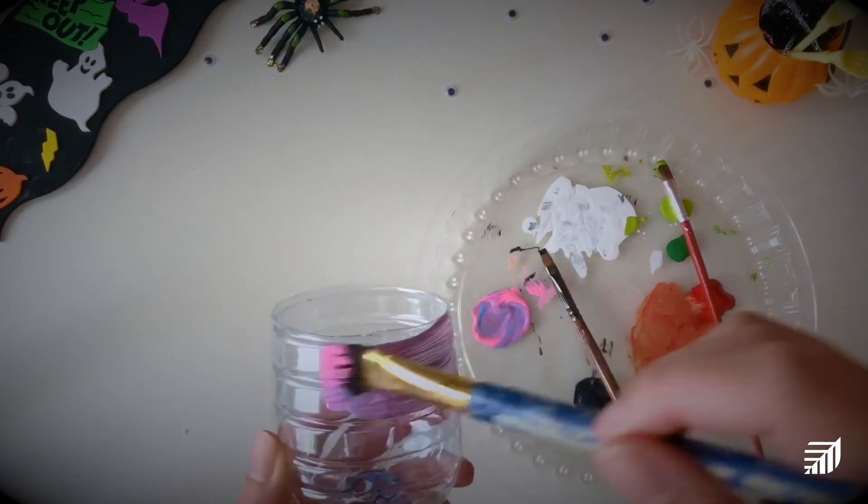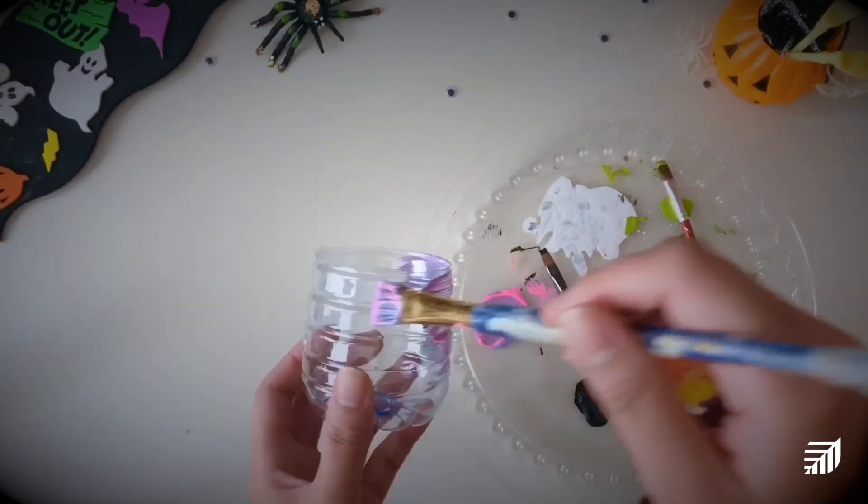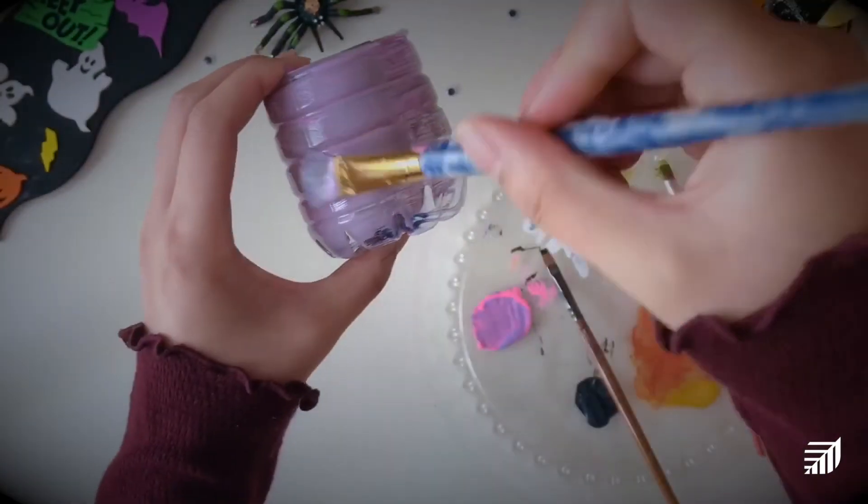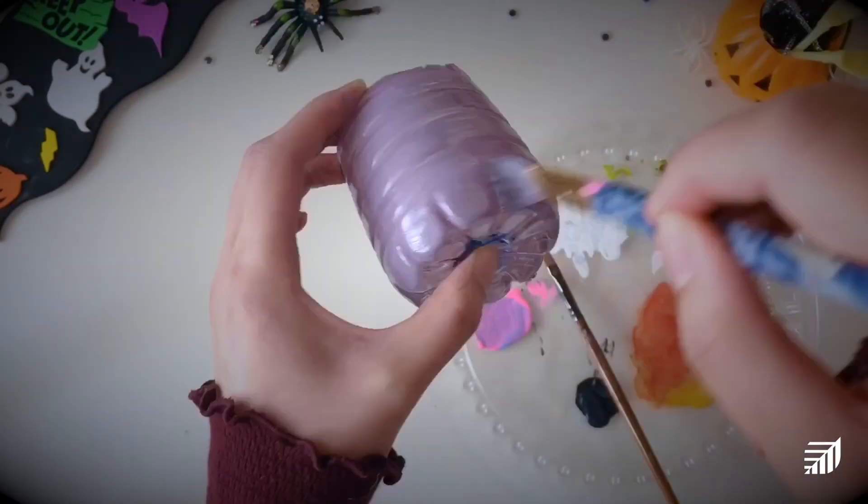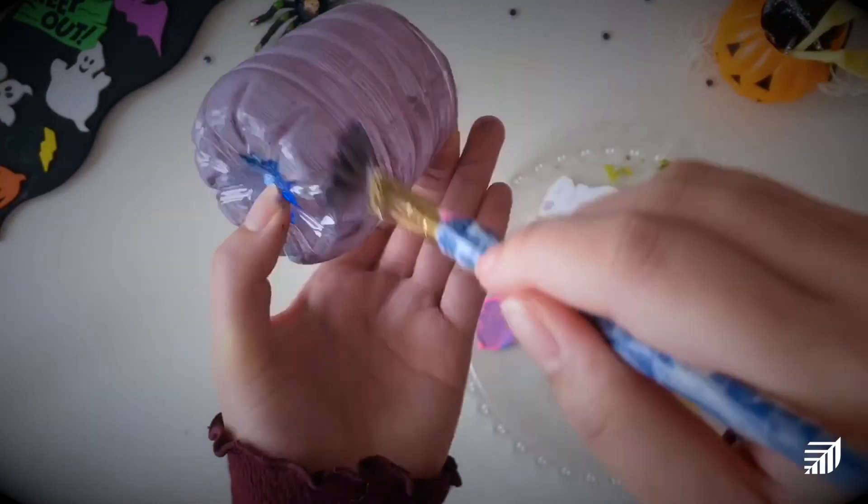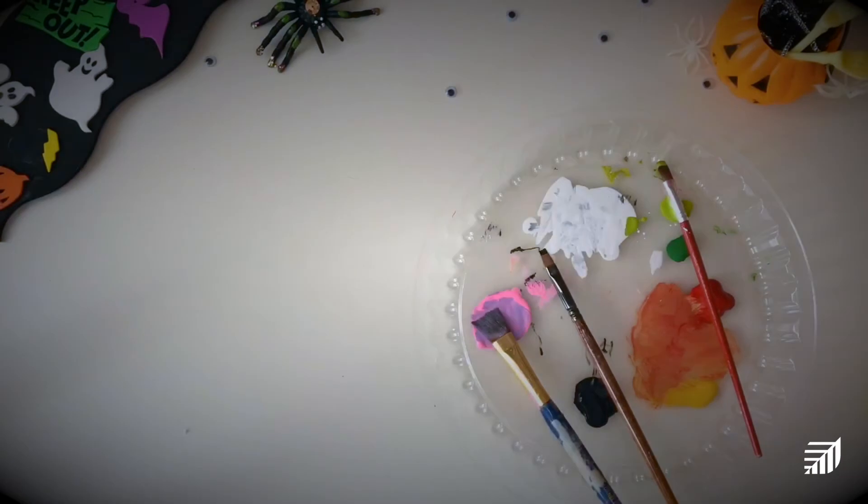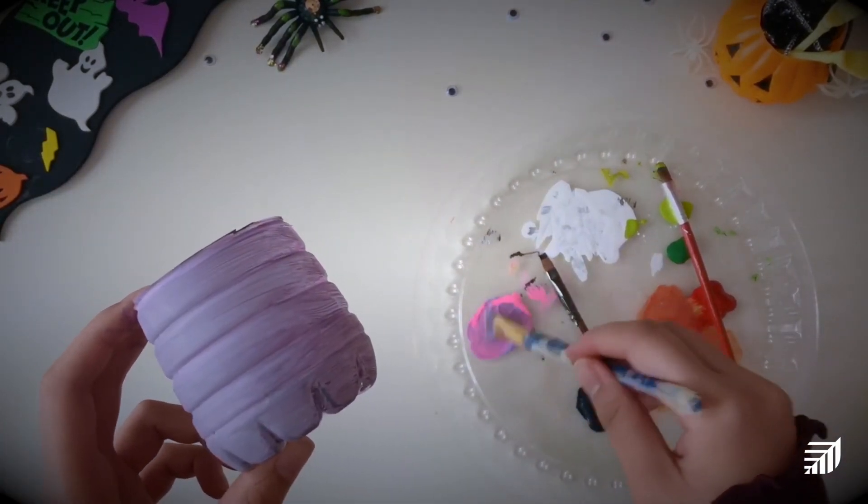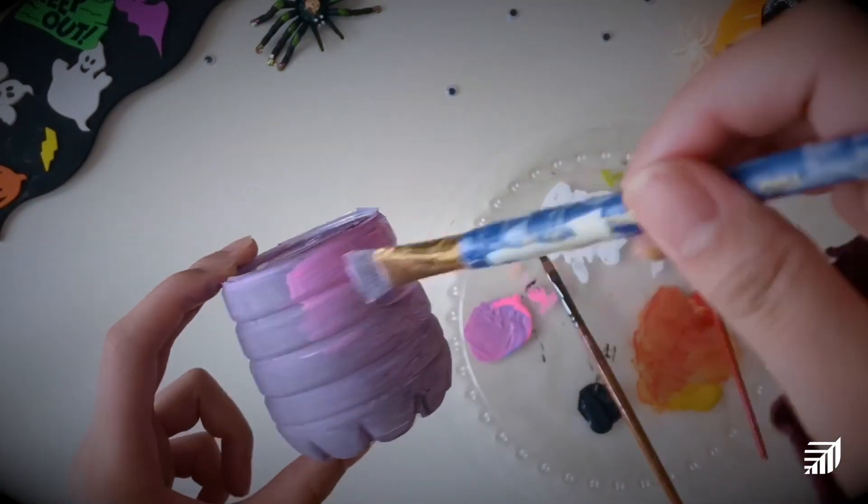Lastly, we're going to make a googly-eyed monster starting with our bottle cut already and then adding some purple paint to the outside. Once we've applied our first coat, I'm just going to set that aside to dry, and then we're going to apply our second coat.